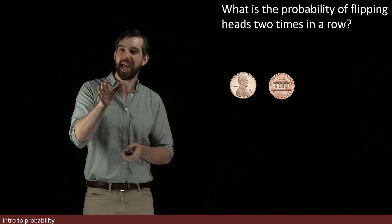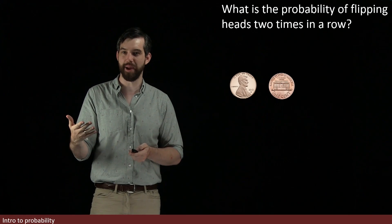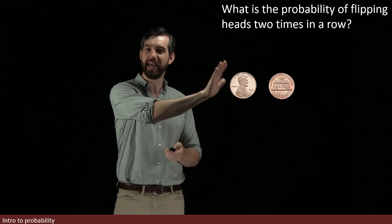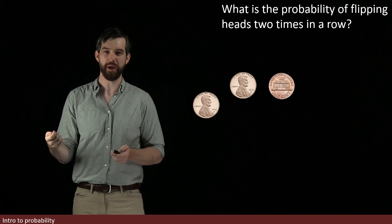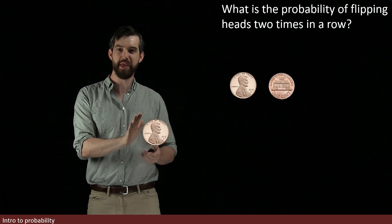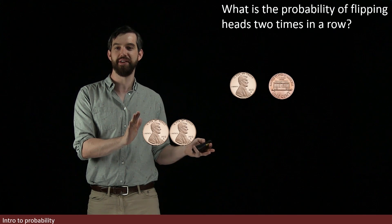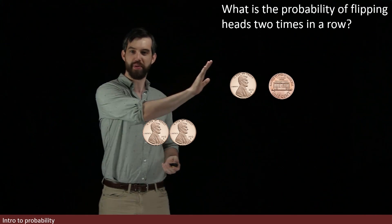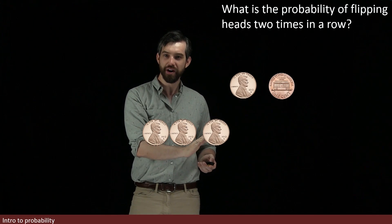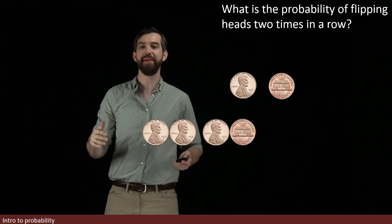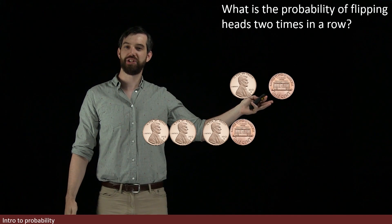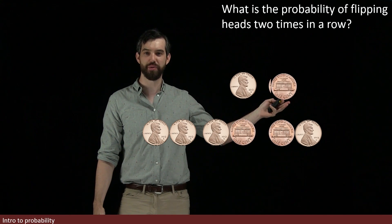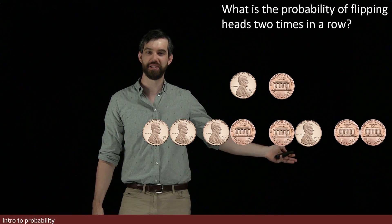Now let's count all the possibilities if I flip the coin a second time. Suppose I begin with heads on the first flip. On the second flip, I could get heads — that's heads, heads — or I could get tails — that's heads, tails. Or it could be that I start with tails and flip to heads, or start with tails and flip to tails.